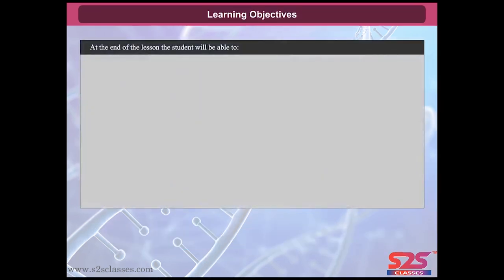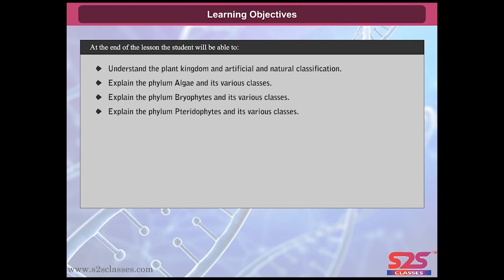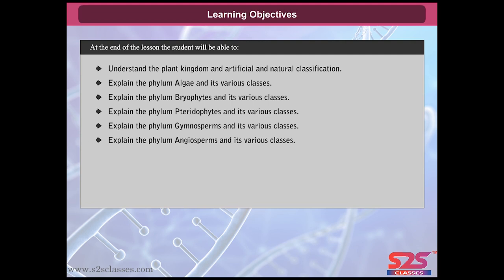At the end of the lesson, the student will be able to understand the plant kingdom and artificial and natural classification, explain the phylum algae and its various classes, explain the phylum bryophytes and its various classes, explain the phylum pteridophytes and its various classes, explain gymnosperms and its various classes, and understand plant life cycles and alternation of generations.